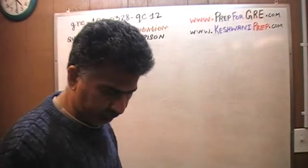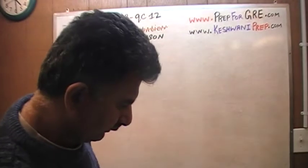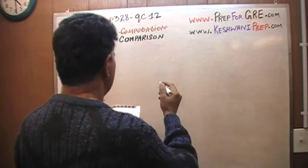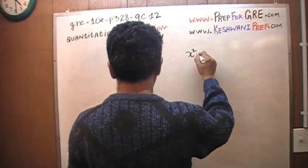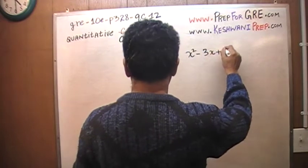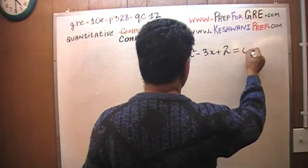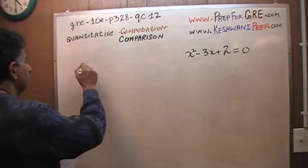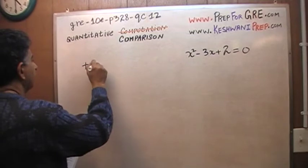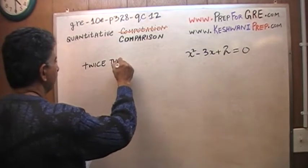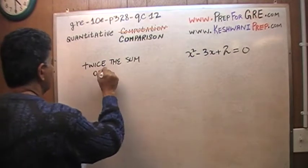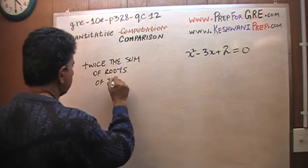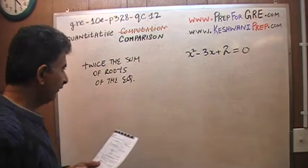Let's take a look at it, see what it has to say. Number 12. They give you an equation here: x squared minus 3x plus 2 equals 0. And they want us to compare twice the sum of the roots of the equation versus 6.